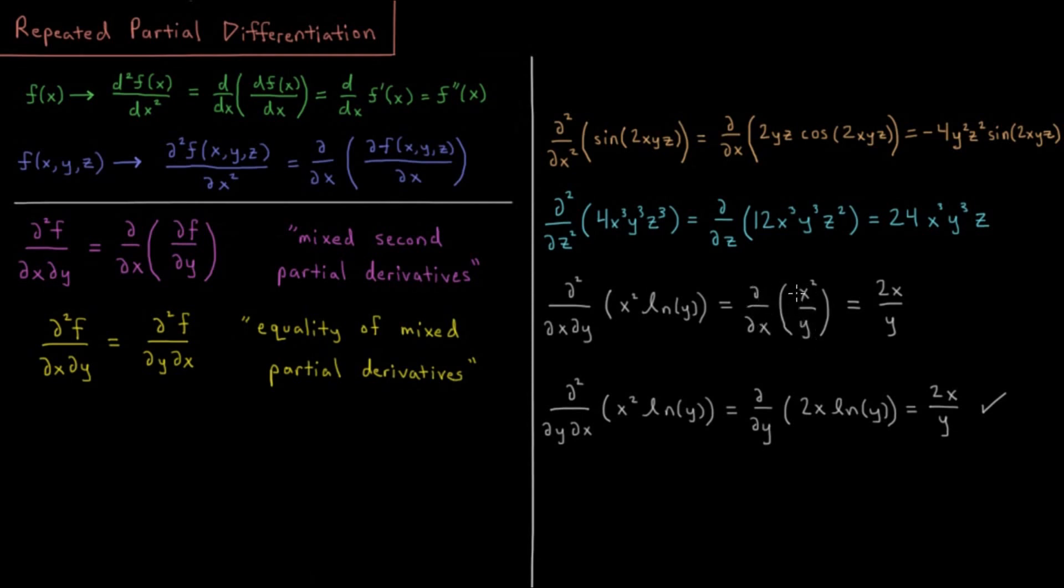Derivative with respect to x, x² is going to be 2x. 1 over y is a constant, so we get 2x over y.